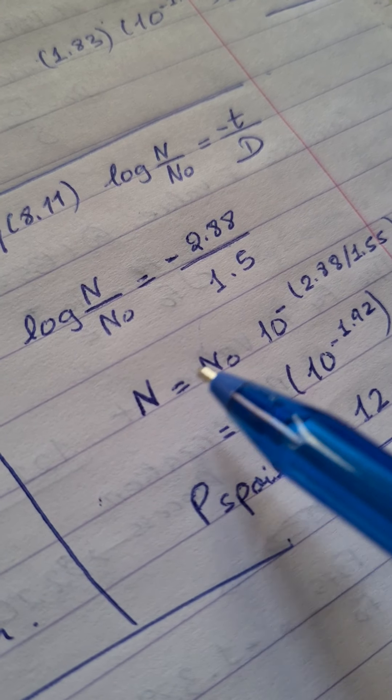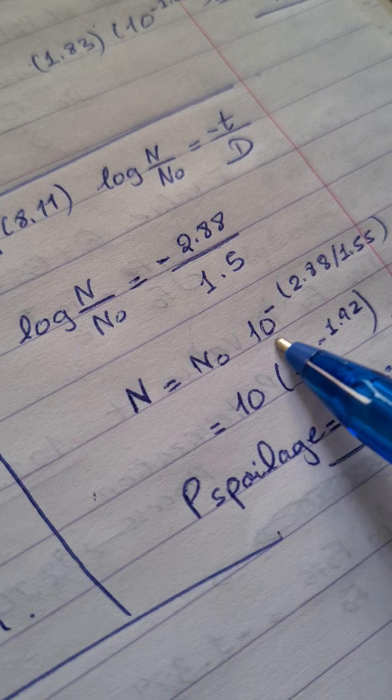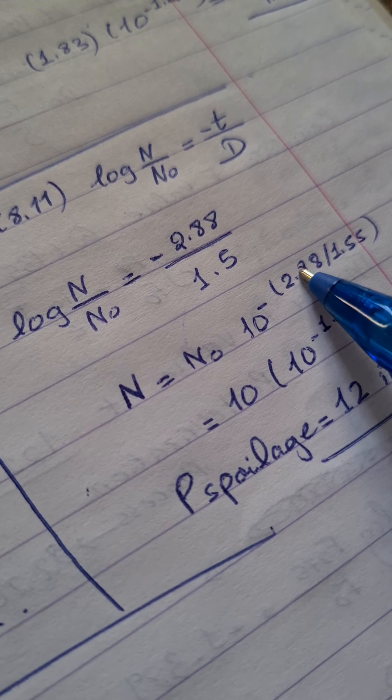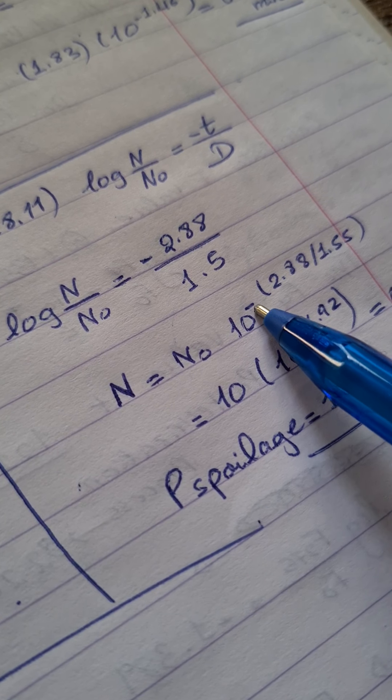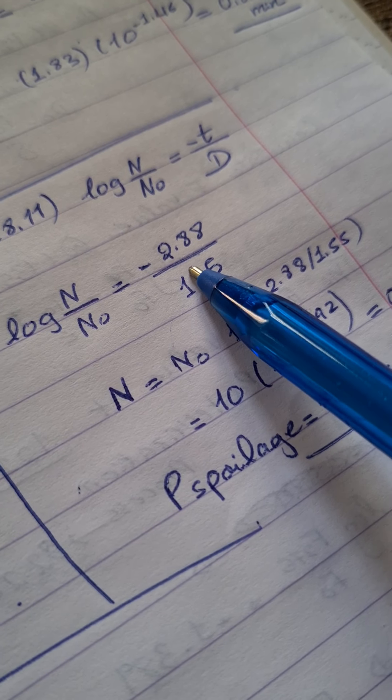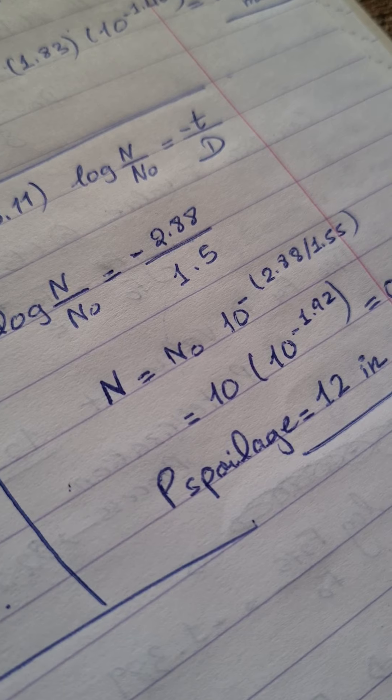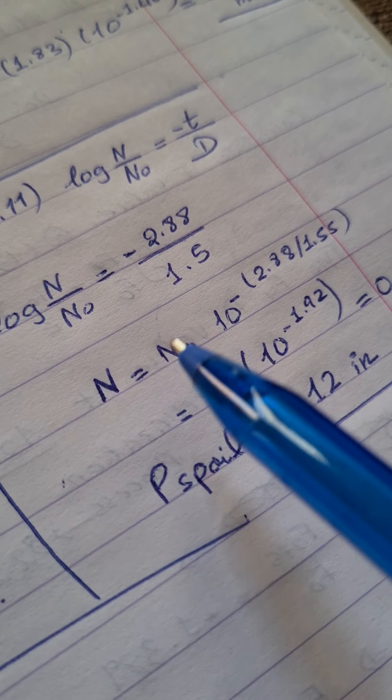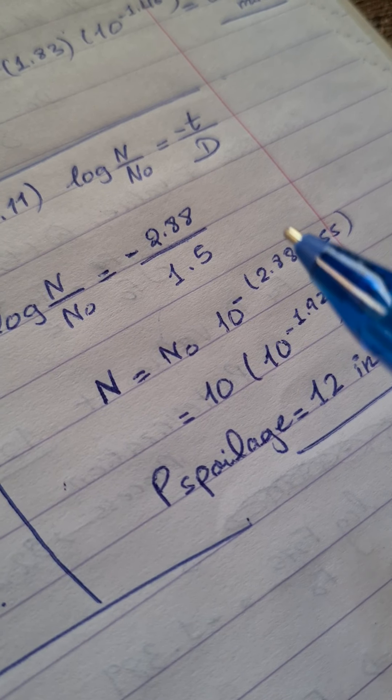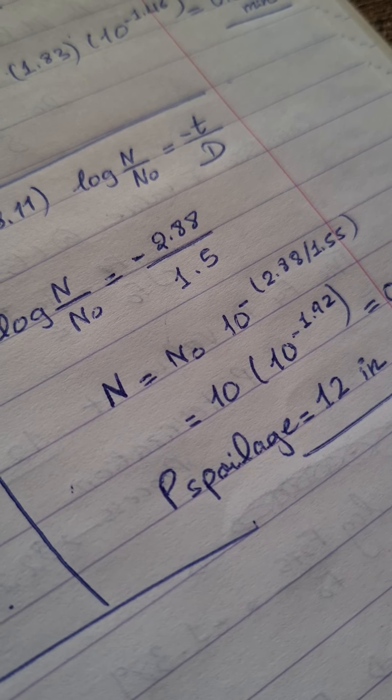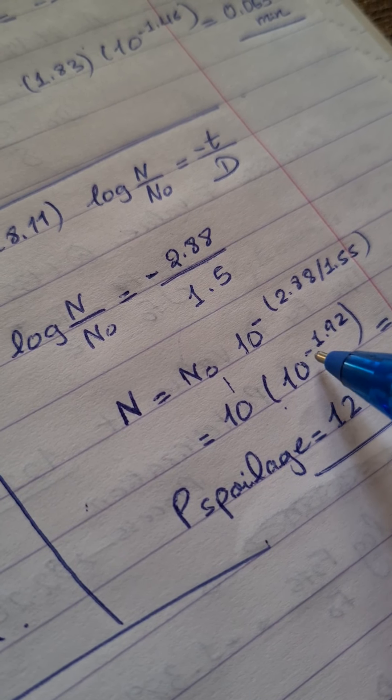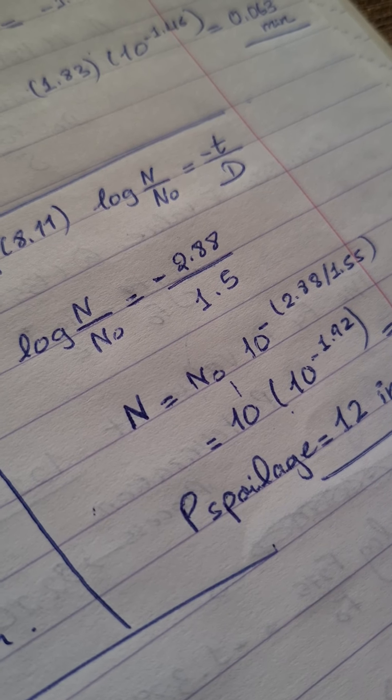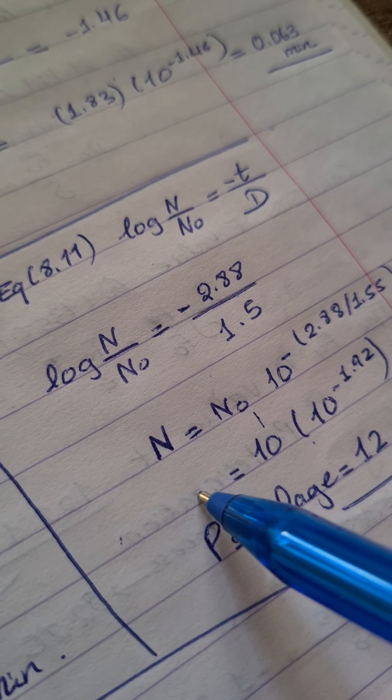N would be equal to N0, 10 to the power minus 2.88 over 1.55. Or I can calculate this using the calculator. And then to the power minus resultant factor. Have I gotten the N0? Yes. It is listed if each can contain 10 spores of an organism. So the N0 is 10 times 10 to the power minus 1.92. It's equal to 0.12 the N.